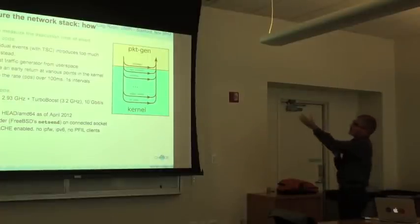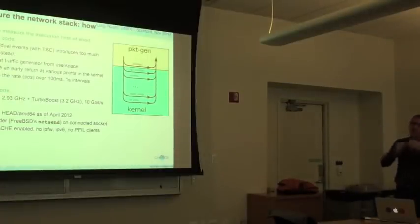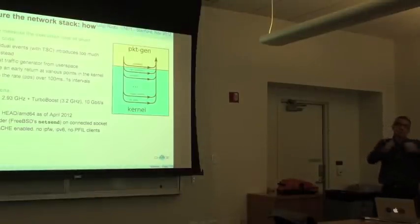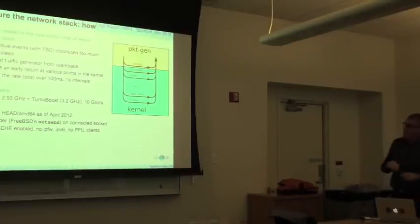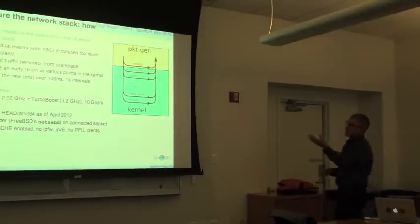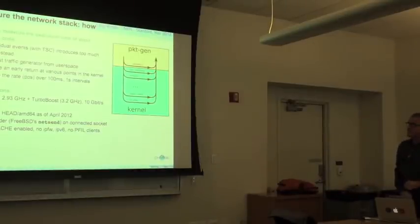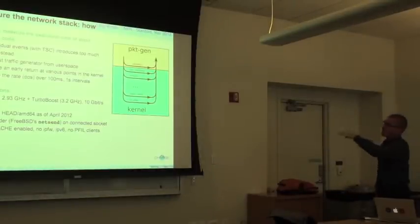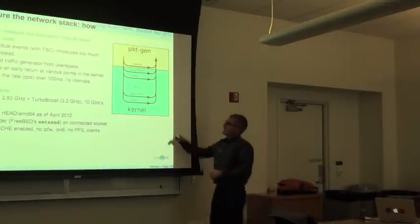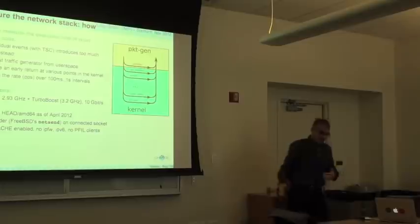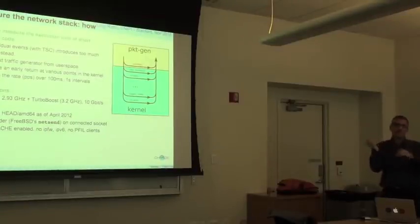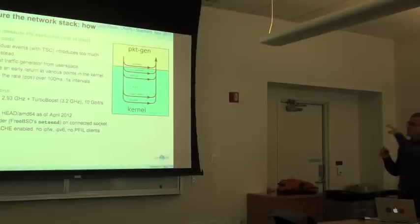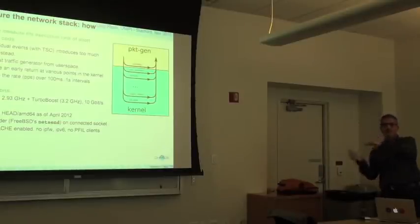The measurement was done on a relatively cheap system — an Intel i7 CPU with a 10-Gigabit interface. This was done on FreeBSD. Linux is somewhat similar, maybe slightly more efficient in some cases because it uses different locking mechanisms. But the device driver cost is about the same in Linux as in FreeBSD.